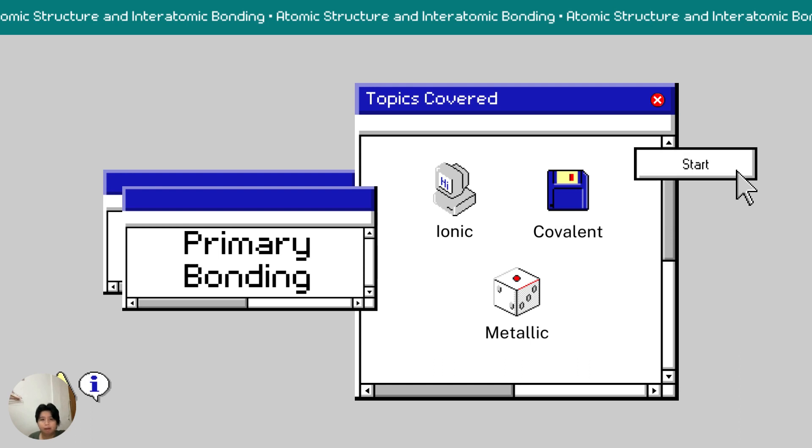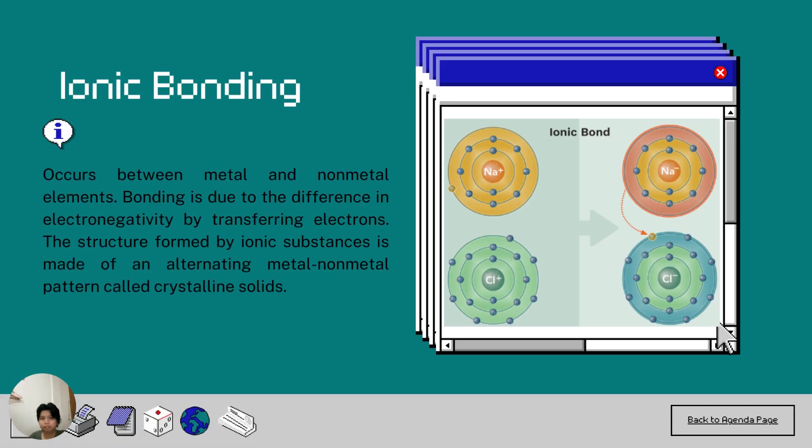Under primary bonding, there are subparts which are ionic, covalent and metallic bonding. First, let's talk about the ionic bonding. It occurs between elements that are metal and non-metal. By transferring electrons, the difference in electron negativity that causes bonding is achieved. Crystalline solids are the alternating metal and non-metal patterns that make up the structure that is created by ionic chemicals.